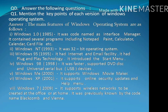Number 5 — Windows Me: It was introduced in 2000. It supports Windows Movie Maker. Number 6 — Windows XP: It was introduced in 2001. It supports online security updates and help menu. Number 7 — Windows 7: It was introduced in 2009. It supports wireless network to be created at the office or at home. It was previously known by the code names BlackComb and Vienna.